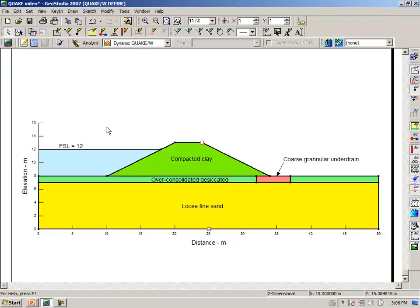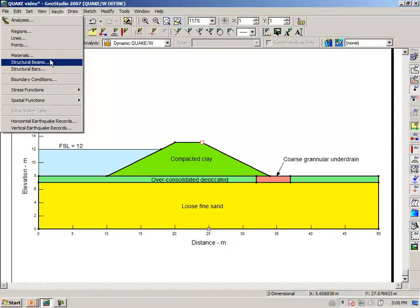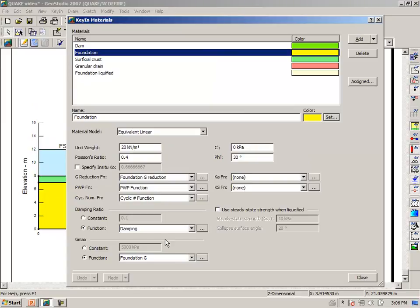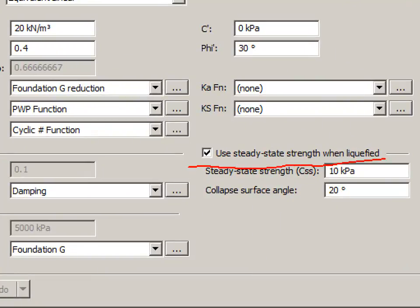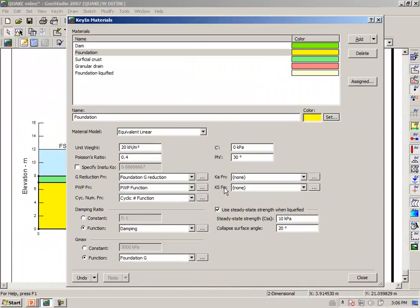Now, at this stage, I would like to illustrate a point. This will become clear as we go along. But for the time being, click on Key In, Materials, selecting the foundation soil. We want to make sure that we uncheck use steady strength when liquefied. First of all, we're going to do it with this unchecked. And then later on, we will check this and interpret the difference and the meaning of when we use this option here. So for the time being, we will uncheck this option, use steady state strength when liquefied. Also, there are some other correction factors here, which I won't take time to explain. But they are set to none at this particular case.